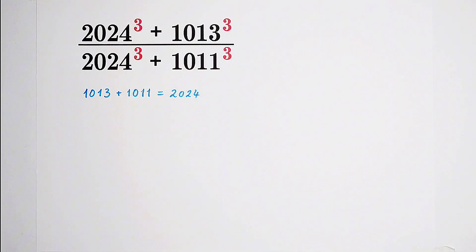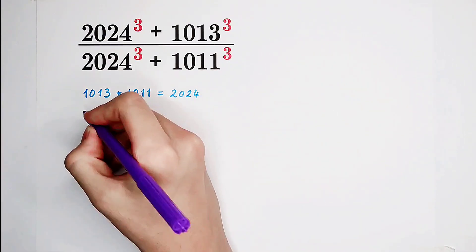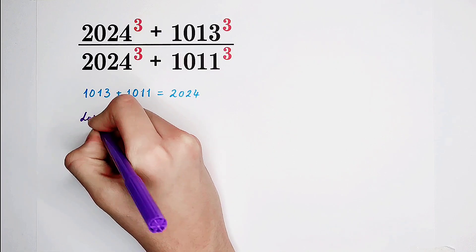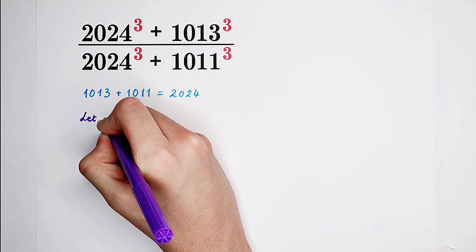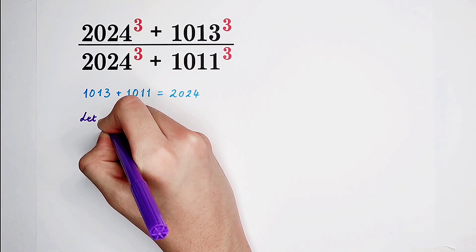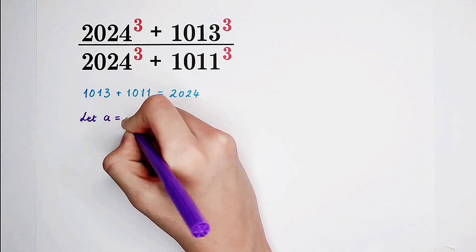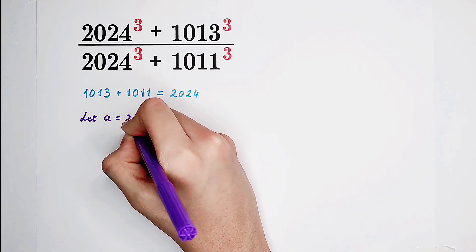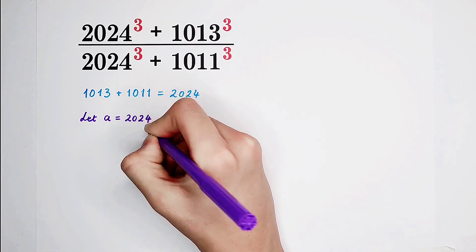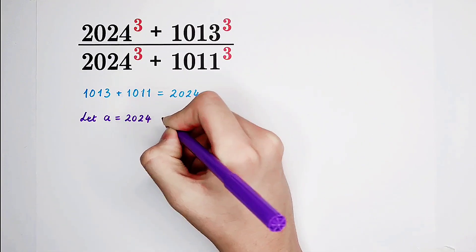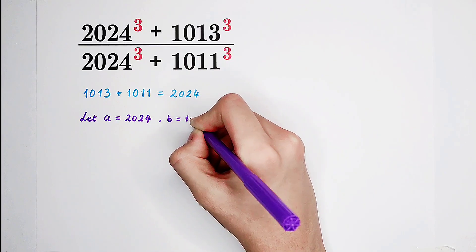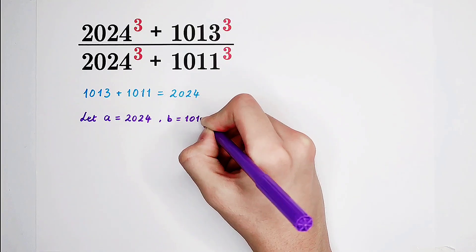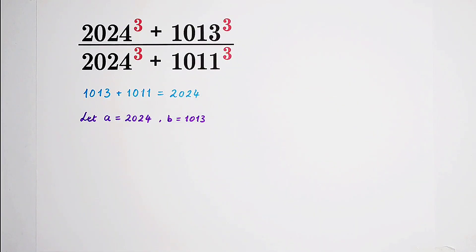We can substitute. We can let, for example, a be equal to 2,024. And b be equal to 1,013. Isn't that nice?